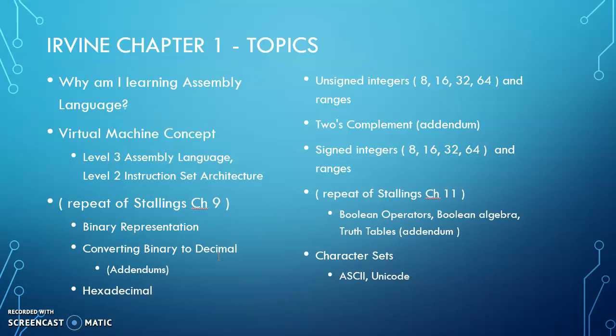We'll also look at hexadecimal, and we'll look at unsigned and signed integers. One of the slides in Irvine Chapter 1 shows for 8, 16, 32, and 64 bits what the range of numbers are for unsigned integers and how those are represented.